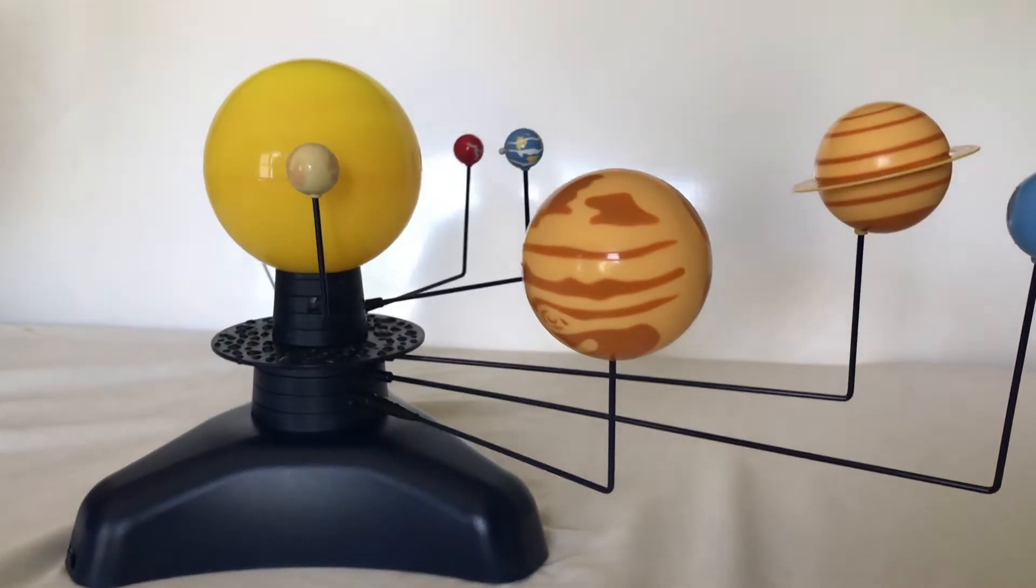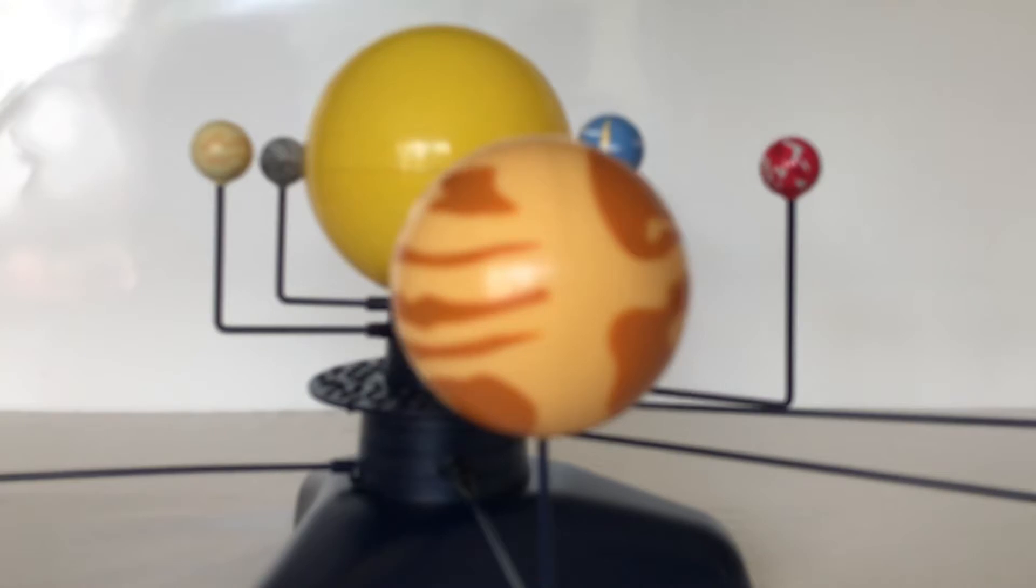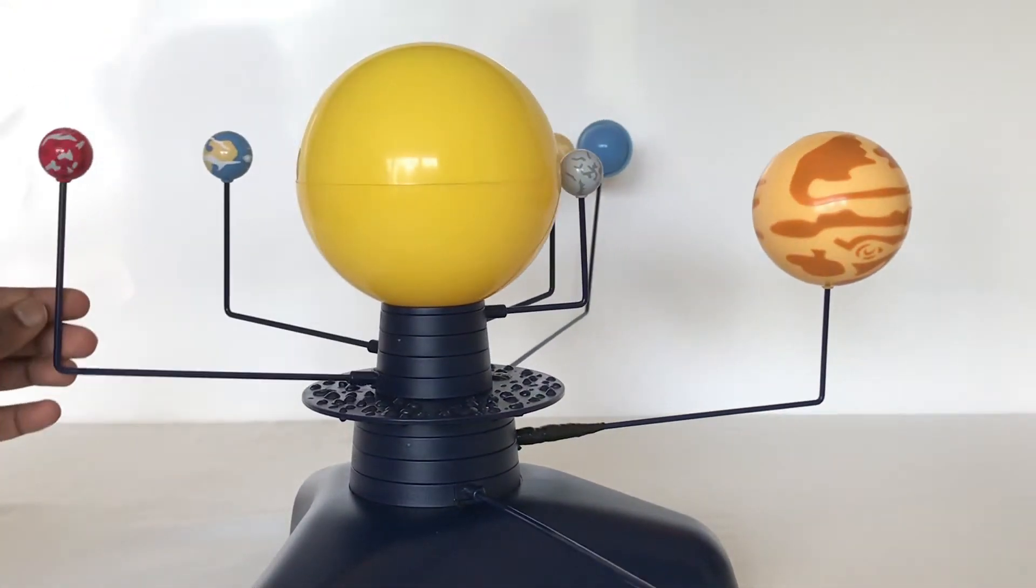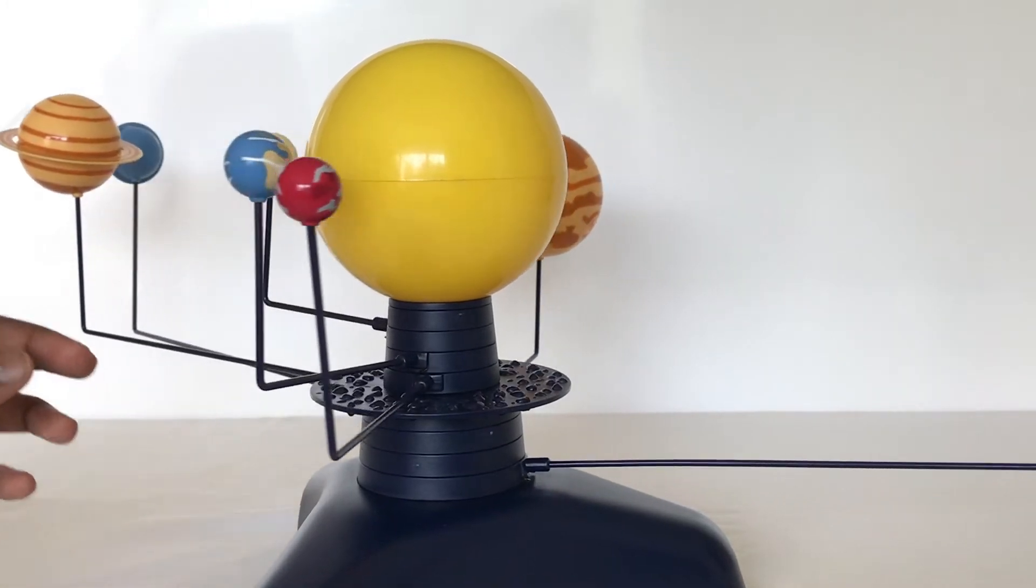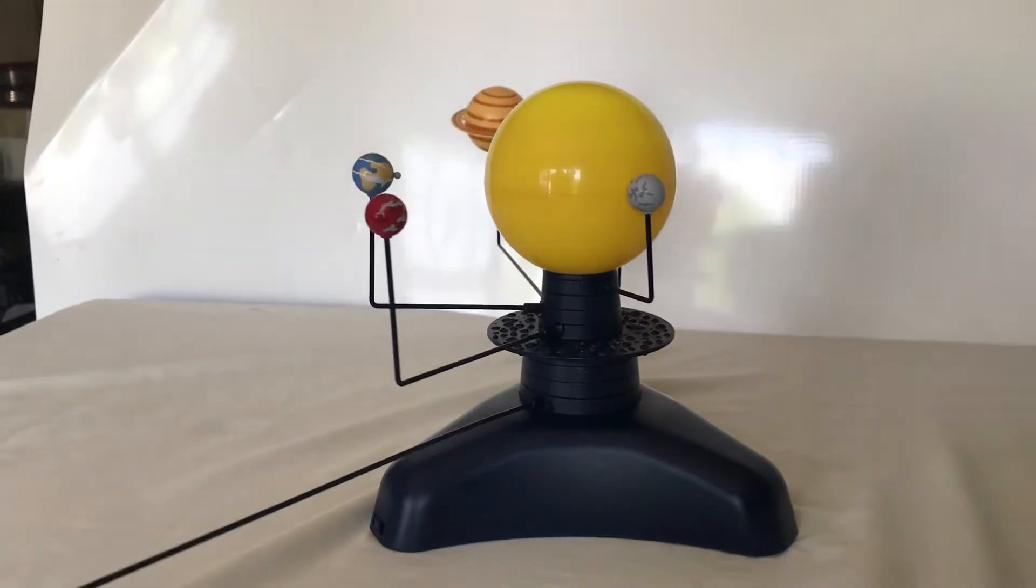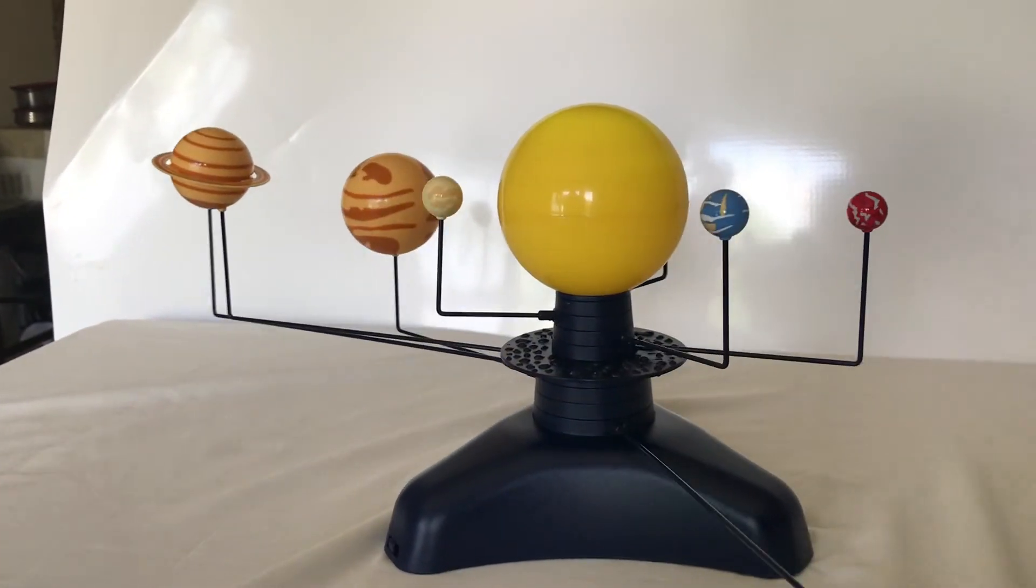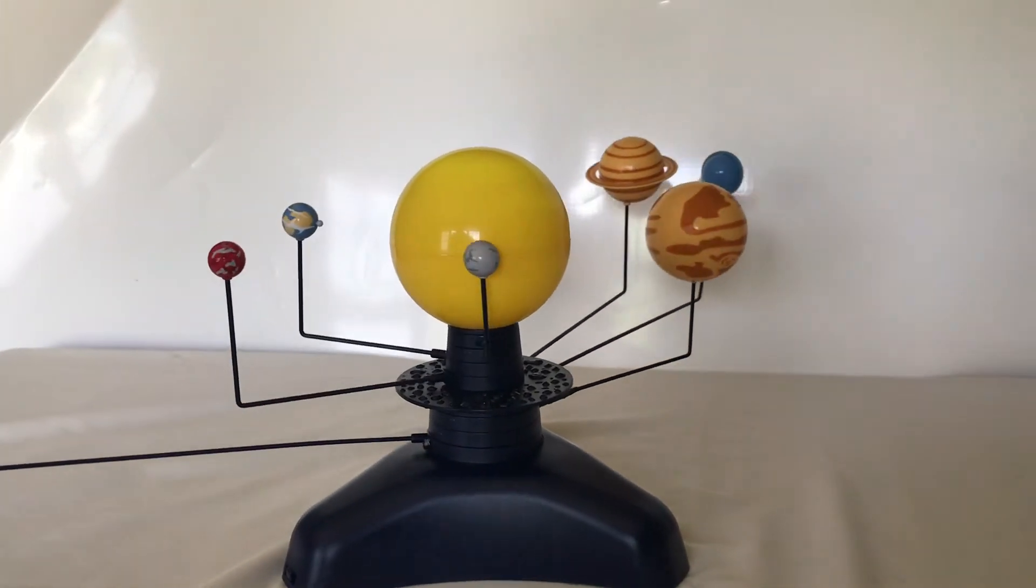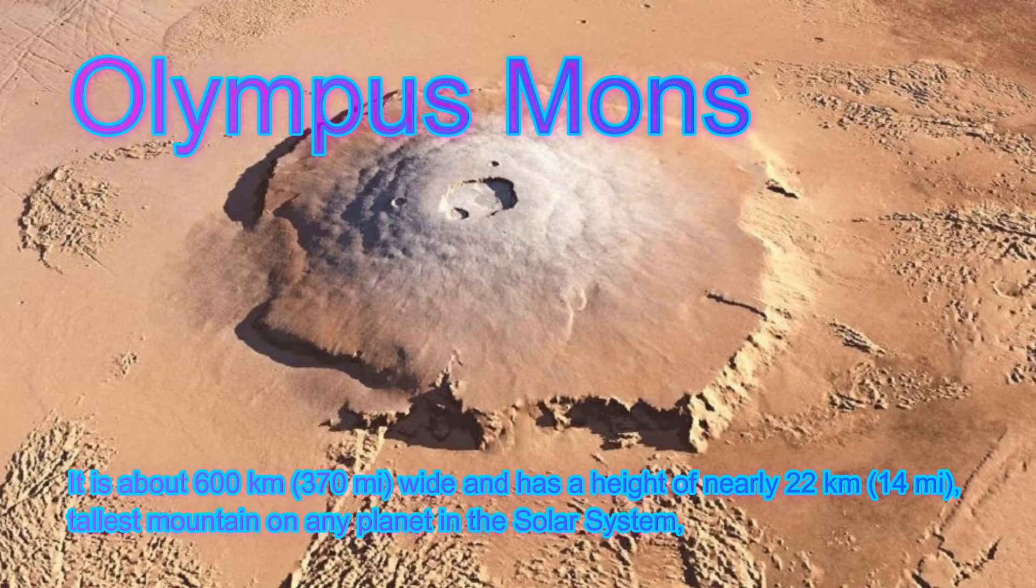Our fourth planet is Mars, the red planet. Earth is right next to the biggest planet. Mars has two moons, Phobos and Deimos. Mars has the biggest volcano called Olympus Mons.